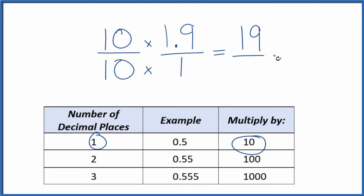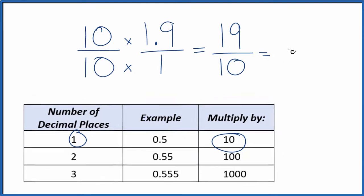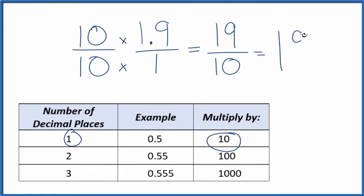So 10 times 1, that's 10. And we have our fraction. This is an improper fraction. The numerator's bigger than the denominator. So you might want to change it to a mixed fraction. 10 goes into 19 just one time with 9 left over. So we call it 1 and 9 tenths.